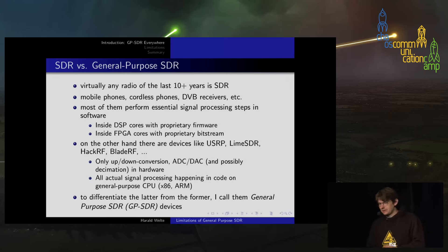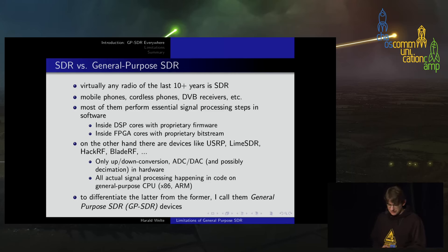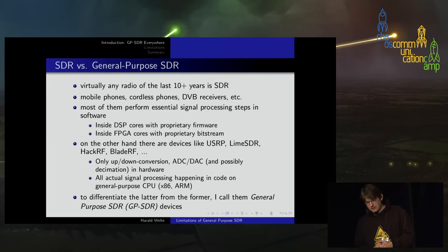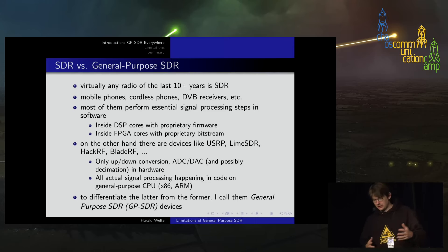Most software-defined radio devices that are not general-purpose — such as phones, DVB receivers, or virtually any radio — perform essential signal processing steps in software, but that happens inside DSP cores, typically inside FPGAs, most often with proprietary bitstream or firmware. On the other hand, we have general-purpose SDR boards, where the device does little more than up and down conversion from radio frequency and analog-digital conversion using ADC or DAC in hardware. You then get baseband samples into your PC — typically x86 or ARM — and do all software processing on a general-purpose CPU without DSPs.